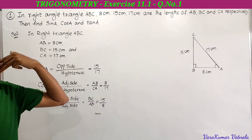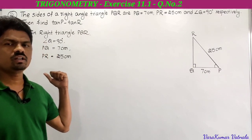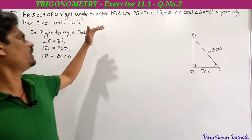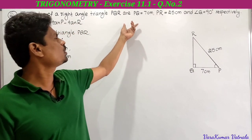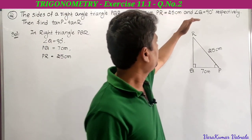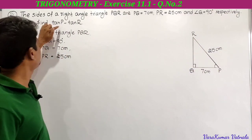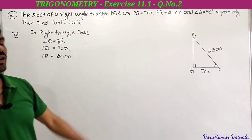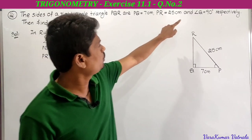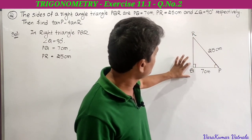Next, the second problem in exercise 11.1. The sides of a right angle triangle PQR are PQ equal to 7 centimeters, PR equal to 25 centimeters, and angle Q equal to 90 degrees. Find tan P minus tan R. In right angle triangle PQR, angle Q equals 90 degrees.